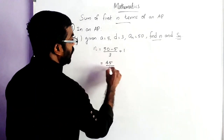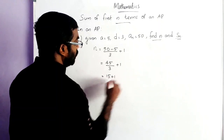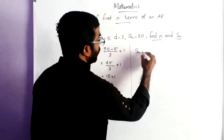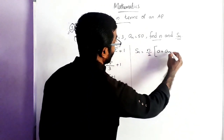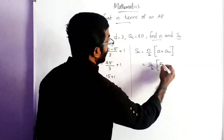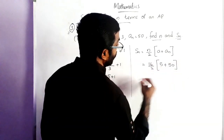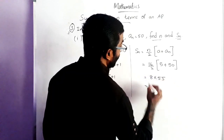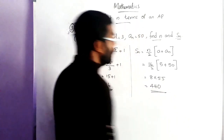So here 45 by 3 plus 1. 45 by 3 is 15, plus 1 which equals 16. Now the sum S_N: we use the formula N by 2 into A plus AN. So 16 by 2 into A is 5 and AN is 50. That is 8 into 55. So 8 into 55 is 440. The sum is 440.